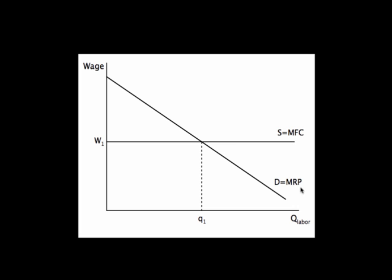There are basically two things that shift the labor demand curve. The first is the price of the product — marginal revenue product is price times marginal product, or marginal revenue times marginal product. So if the price of the product I'm selling goes up due to a demand shift in the output market, that causes a demand shift in the input market. This is why it's called derived demand — the demand for this input is derived from what's happening in the output market.